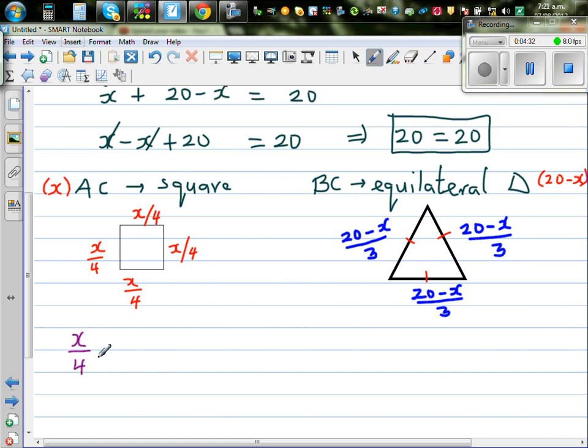x over 4 plus x over 4 plus x over 4 plus x over 4. And give you how much? This is 4x over 4 which is nothing but x. And that does make sense.